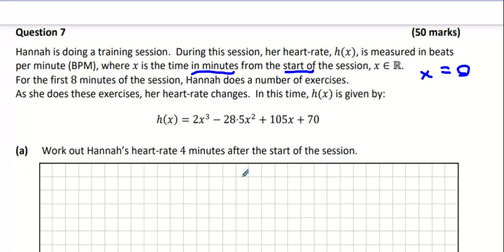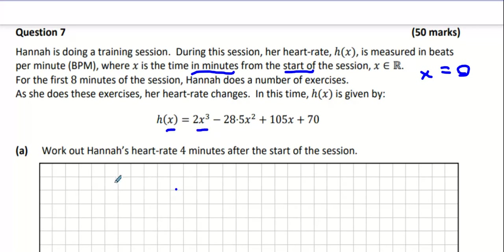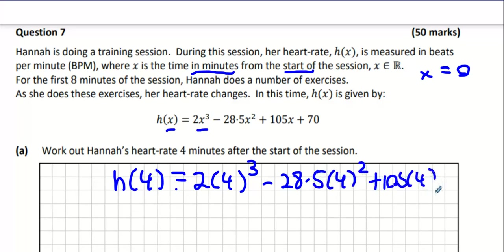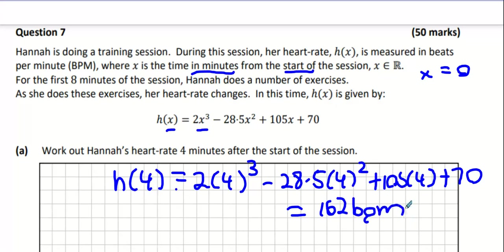Work out Hannah's heart rate four minutes after the start of the session. All we've got to do is replace x with four because you enter in the number of minutes and it will tell you what the heart rate is. So this part here, 2 times 4 cubed minus 28.5 multiplied by 4 squared plus 105 times 4 plus 70. Checking the mark scheme, 162 BPM is her heart rate after four minutes.